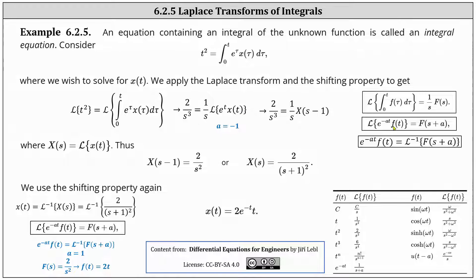Now we apply the shifting property to determine the Laplace transform of e to the t times x(t). Looking at the shifting property, notice a is equal to negative one. Therefore, the Laplace transform of e to the t times x(t) is equal to X(s minus one). The right side becomes one divided by s times X(s minus one), where X(s) is the Laplace transform of x(t).